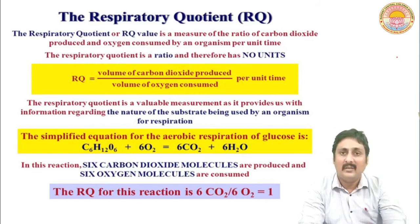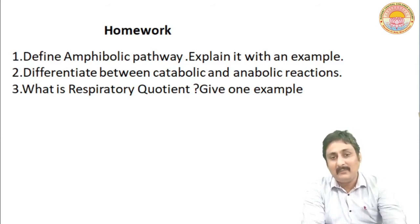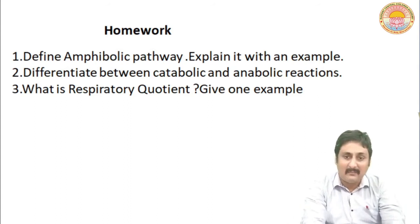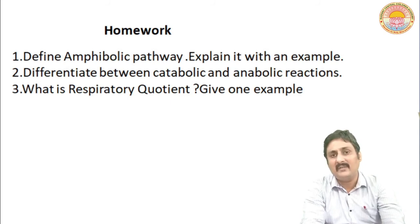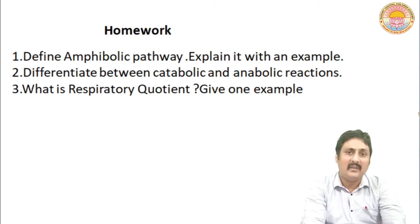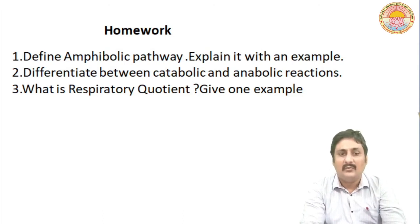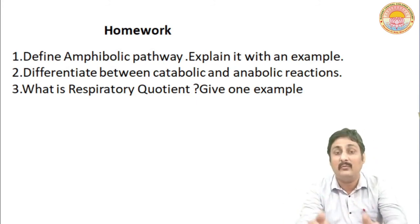The RQ value for carbohydrate is 1, for protein it is 0.9, and for fat it is 0.7. For homework: define amphibolic pathway and explain it with an example; differentiate between catabolic and anabolic reactions. In catabolism, a complex substance breaks into simple substances and energy is liberated. In anabolism, simple substances join together to form a complex substance and energy is utilized.